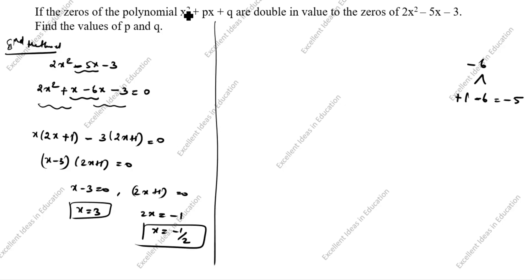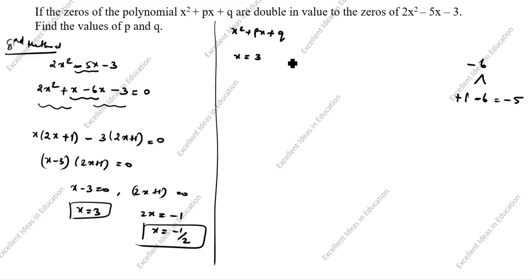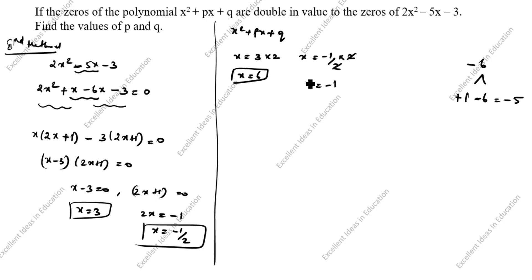The zeros of x squared plus px plus q are double in value to the zeros of 2x squared minus 5x minus 3. So we double these values: x equals 3 becomes x equals 6, and x equals minus 1 by 2 becomes x equals minus 1. Now we have our two required zeros: 6 and minus 1.